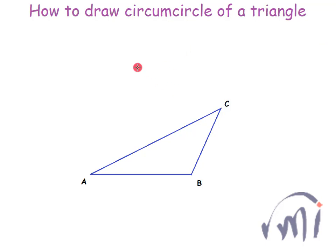When we draw the perpendicular bisector of AB, it looks something like this. So what is the specialty of this perpendicular bisector?